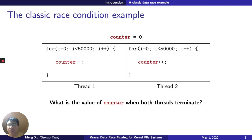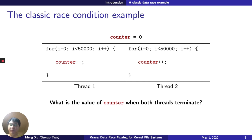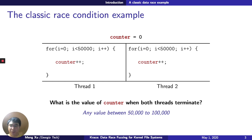A classical data-race example is shown here. Suppose we have a toy program using two threads to increment a counter value. We want to count to 100,000 faster. However, this is not actually the case. In fact, any value between 50,000 and 100,000 is possible out of the program, because both threads are racing against each other to read and write to the variable counter.